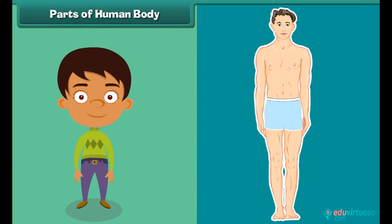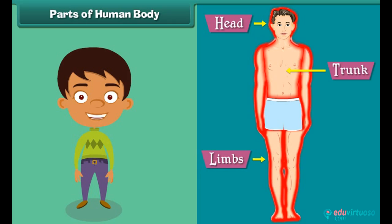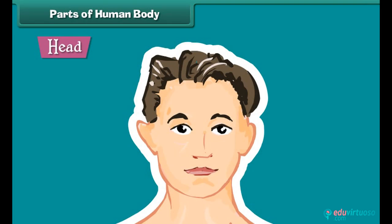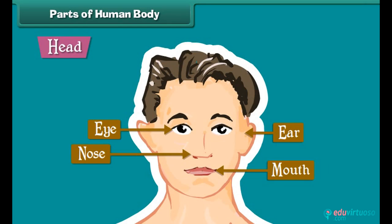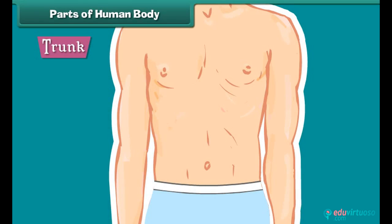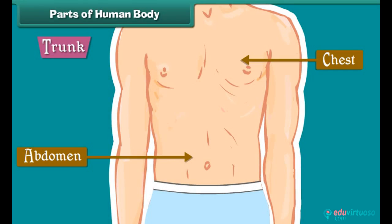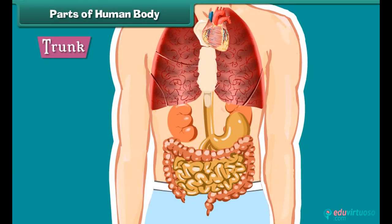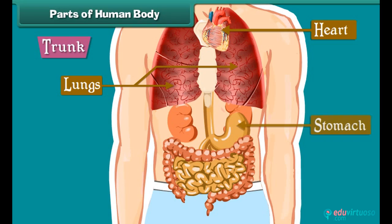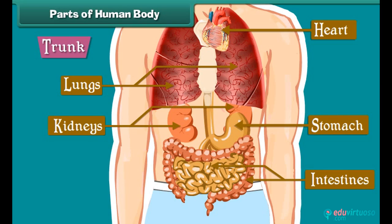The human body is divided into three main parts: head, trunk, and limbs. The head is the uppermost part of the body — eyes, ears, nose, and mouth are located on it. The trunk is the middle part of the body. It is divided into chest and abdomen. Many important organs such as the heart, lungs, stomach, intestines, and kidneys are located inside the trunk.